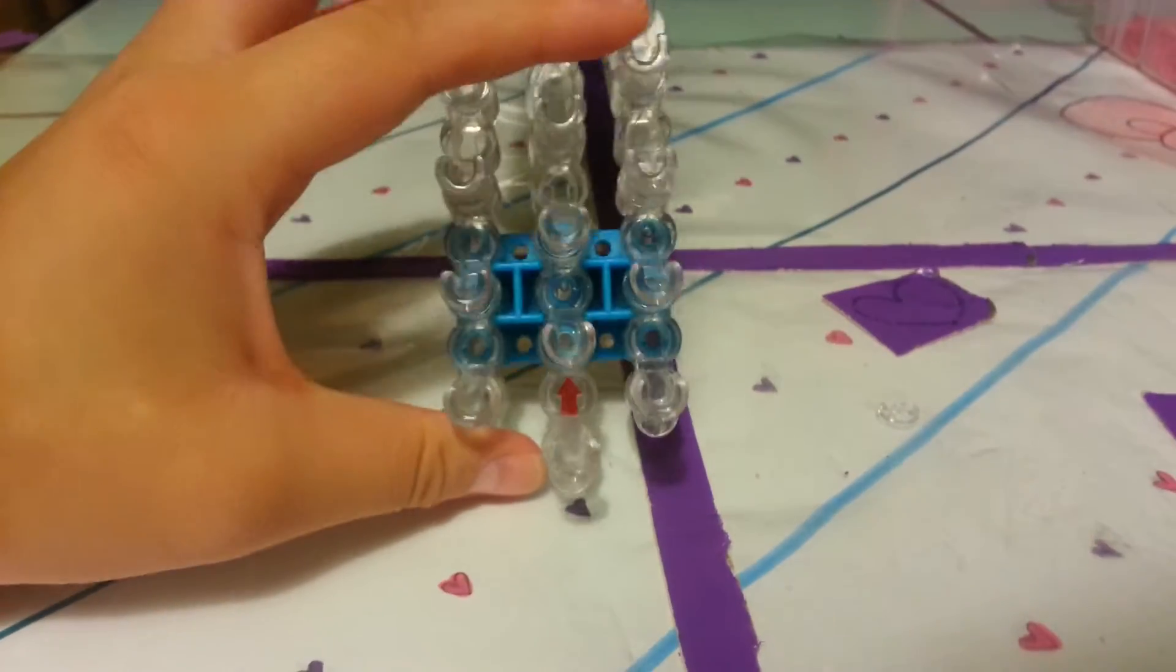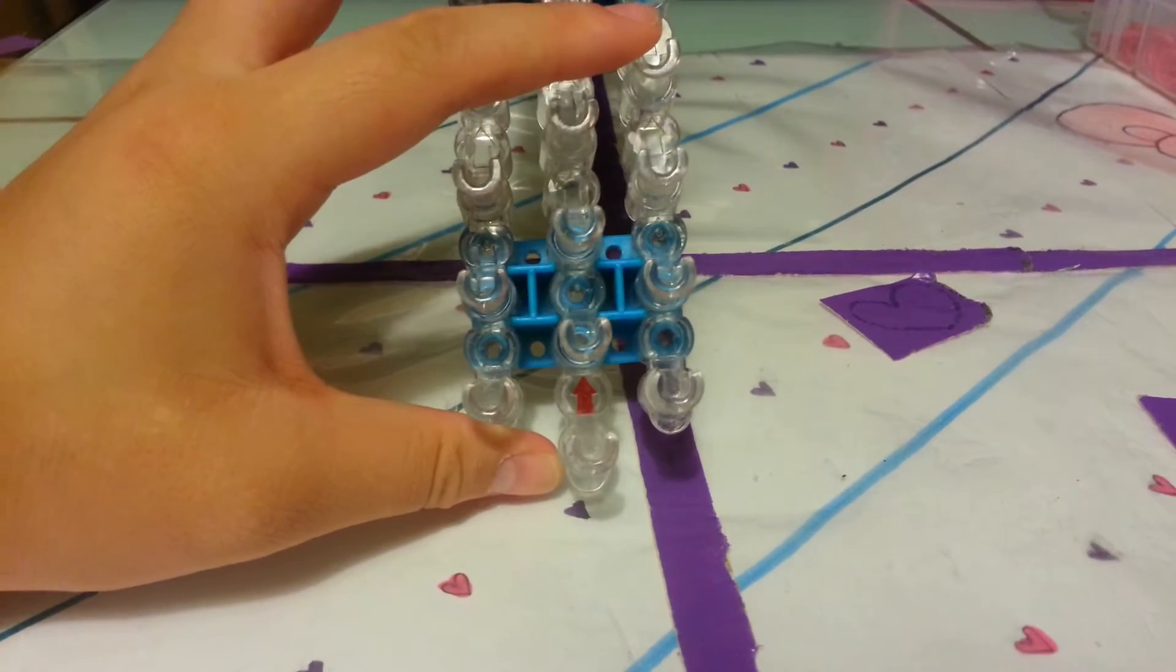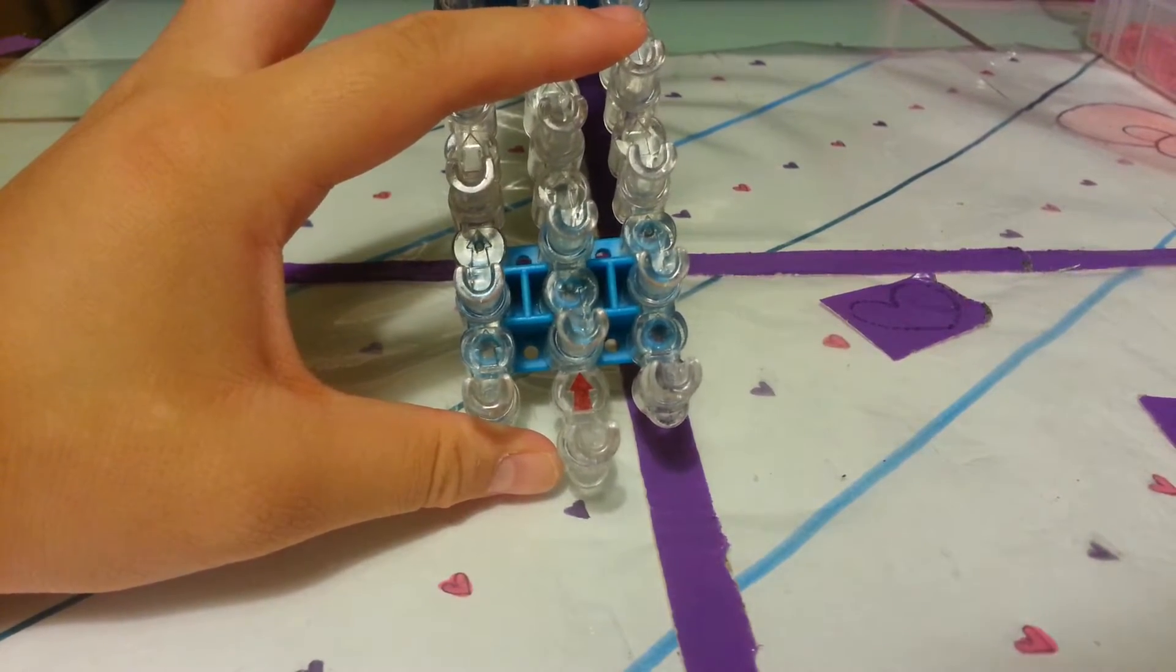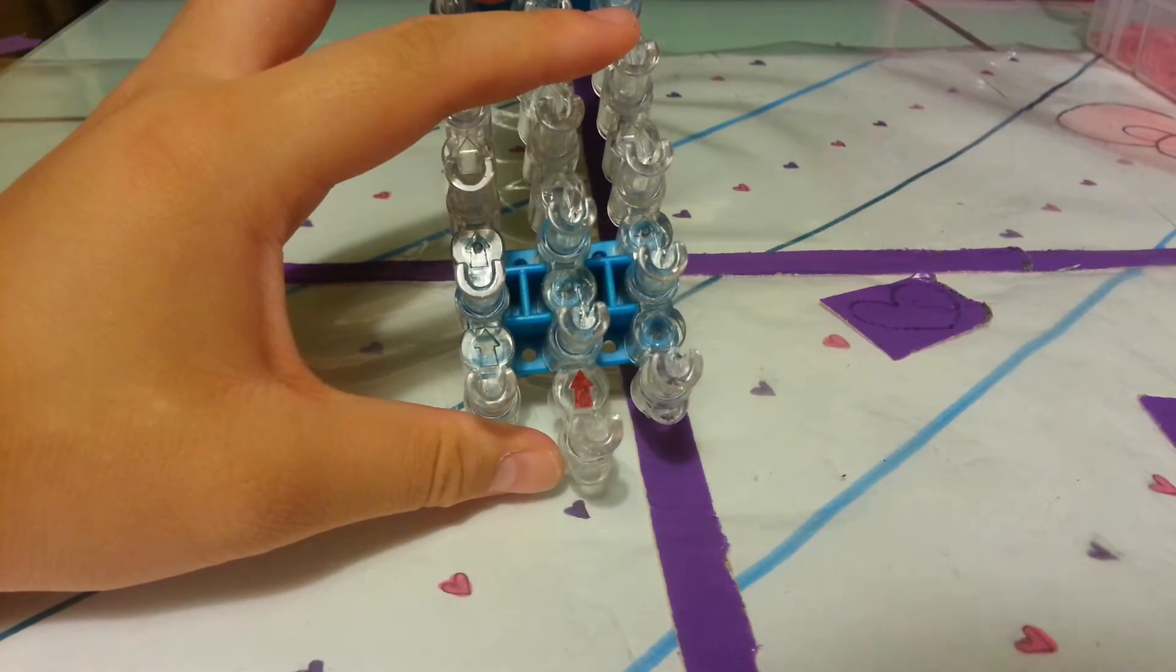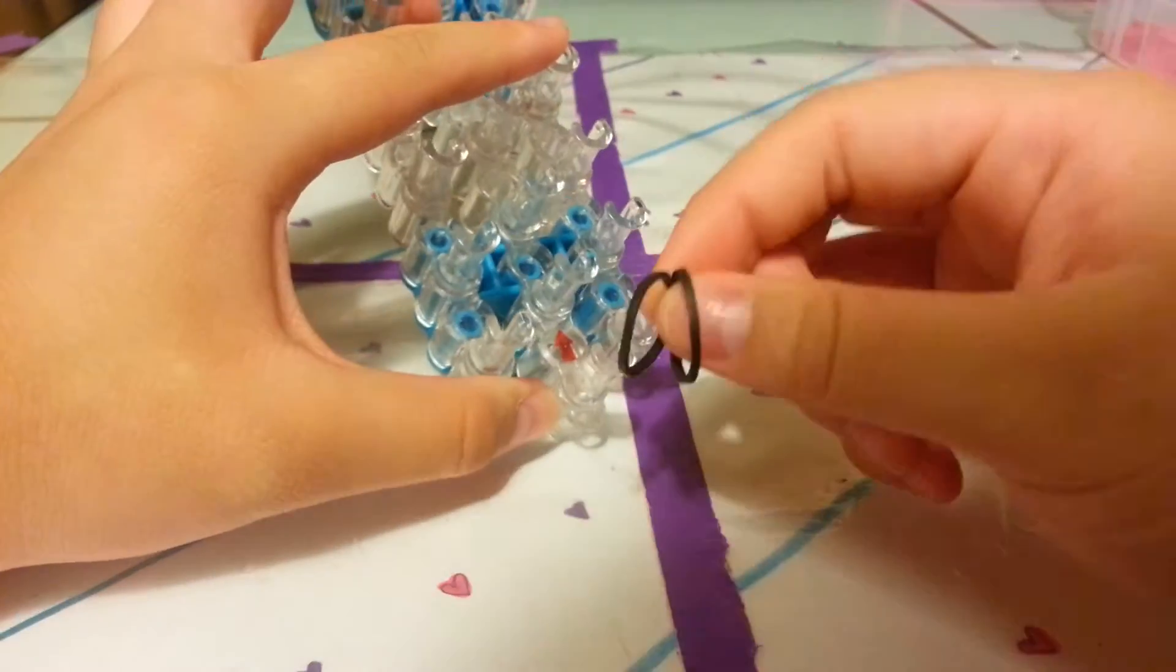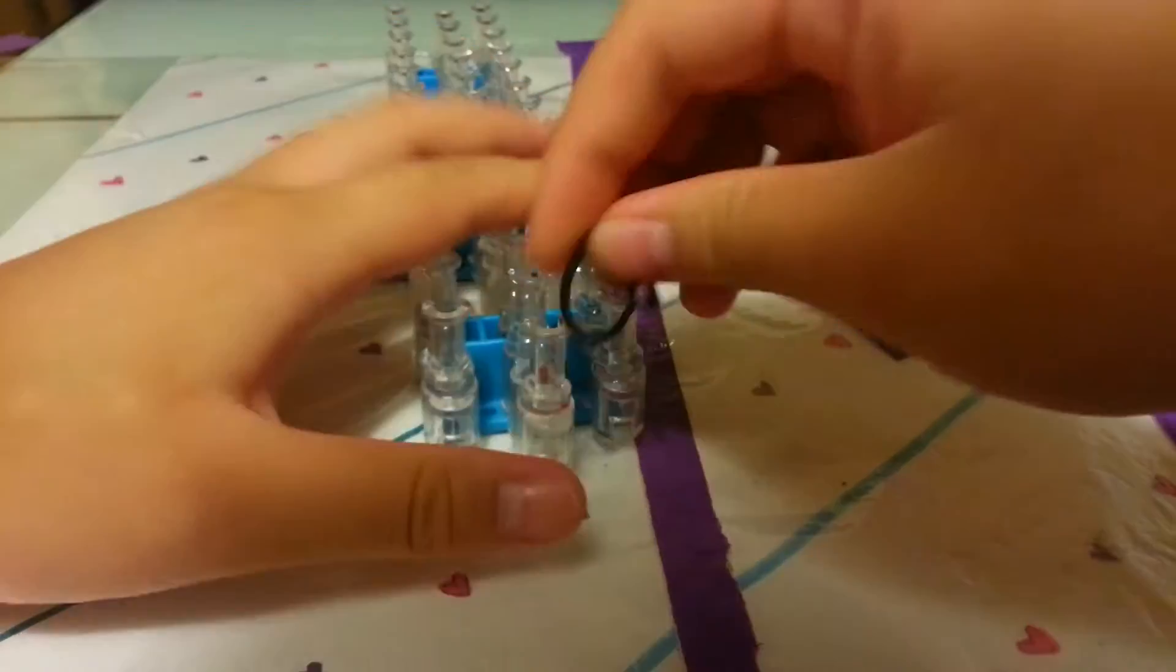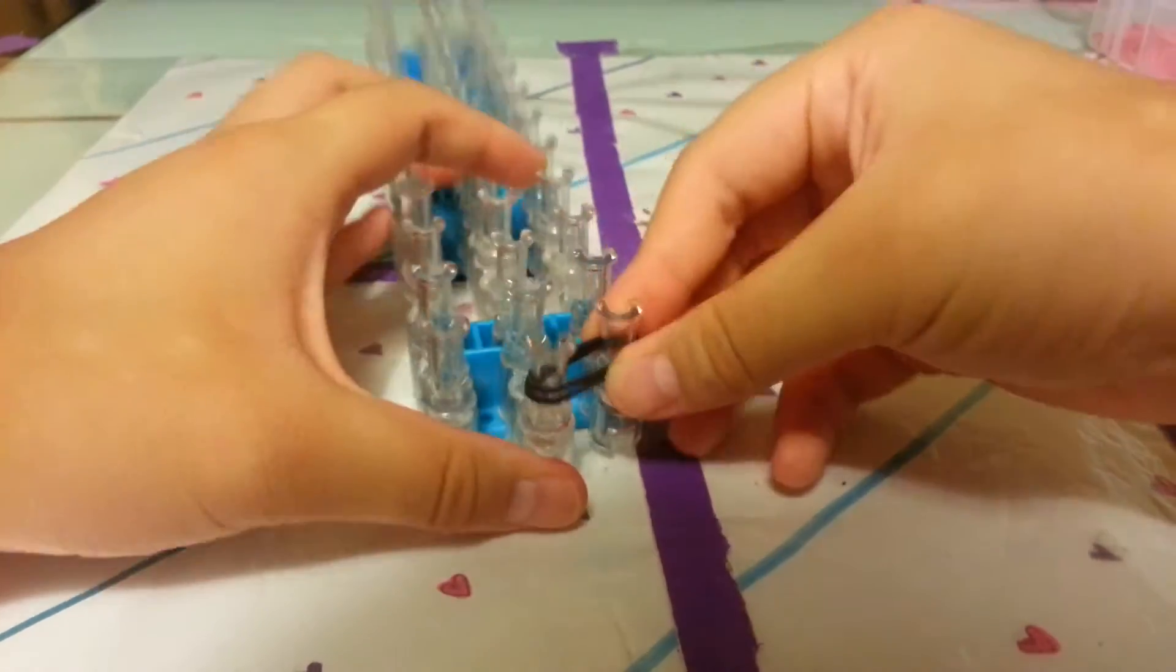First we're going to start off with the red arrow facing away from you. Let's get the clip out of the way. I'm going to start off with my black and place double bands. There's two, so I'm going to place it out like that.